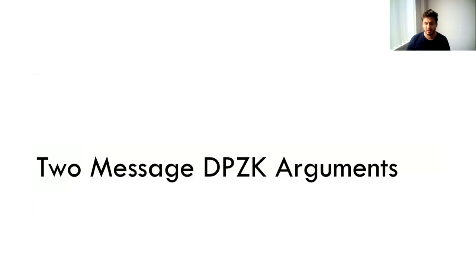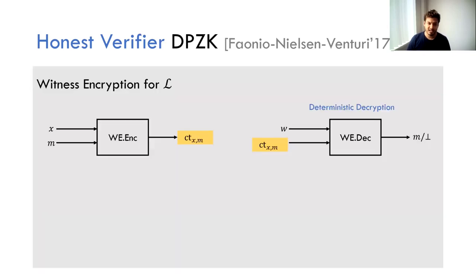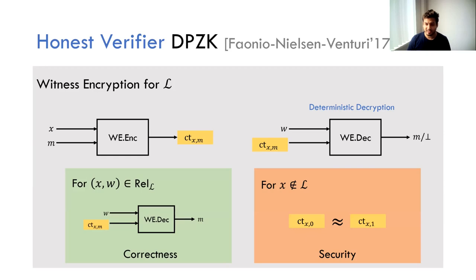Let's go to our construction for the two-message DPZK. The starting point is the honest verifier DPZK by Farnú, Nielsen and Venturi, and since witness encryption is central to our work, let's see what it is. Witness encryption for a language L comes with an encryption algorithm and a decryption algorithm. The encryption algorithm takes in statement x, a message M, and outputs a ciphertext. The decryption algorithm, importantly deterministic, takes in the ciphertext and a string W, and outputs either the message or bottom. Correctness says if W is a witness for the statement, decryption returns M. Security says if the statement is not in the language, the ciphertext hides the underlying message.